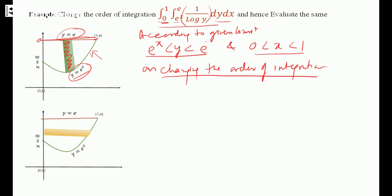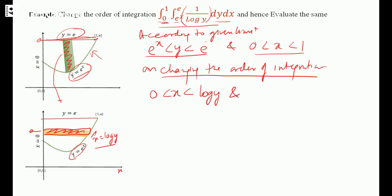On changing the order of integration, we now take the limit of X in terms of Y and take a strip parallel to the X axis. Since y = e^x, we write x = log y, so X varies from 0 to log y. For the Y limits: putting X = 0 in e^x gives y = 1, so Y varies from 1 to e.